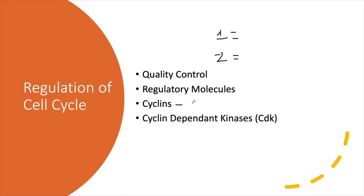Usually there are a lot of cyclins in the cell; the limiting factor tends to be the CDKs. The reason we have this system is to ensure regulation — things need to happen at specific points in time and in certain orders. This is why checkpoints and regulatory molecules exist.